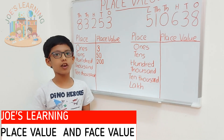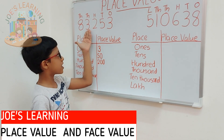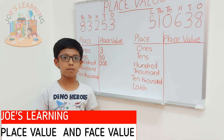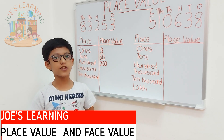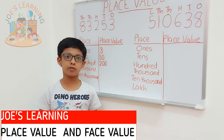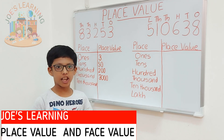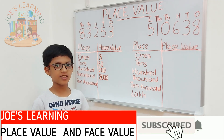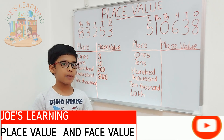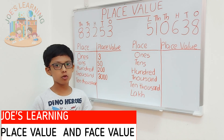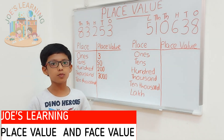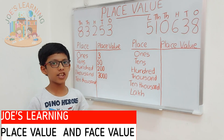Now, let's take a look at the thousands place. In the thousands place, there is 3. So, we have to multiply 3 by 1,000 because it is in the thousands place. So, the place value of 3 will be 3,000. Now, let's take a look at the tens thousands place. 8 is in the tens thousands place. So, 8 multiplied by 10,000 equals its place value, that is 80,000. So, 8's place value in this number is 80,000.